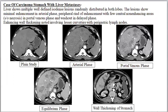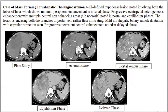In a case of carcinoma of the stomach with liver metastases, the liver showed multiple well-defined isodense lesions randomly distributed in both lobes, with minimal enhancement in the arterial phase, peripheral rind enhancement with central non-enhancing areas in the portal venous phase, and washout in the delayed phase. Enhancing wall thickening was noted involving the lesser curvature of the stomach with perigastric lymph nodes. In a case of mass-forming intrahepatic cholangiocarcinoma, an ill-defined lesion involving both lobes showed minimal peripheral enhancement in the arterial phase, progressive centripetal heterogeneous enhancement with central non-enhancing areas in portal and equilibrium phases suggesting necrosis, encasement of portal vein branches, intrahepatic biliary dilatation with capsular retraction, and progressive persistent central enhancement in delayed phases.